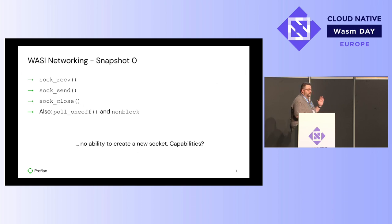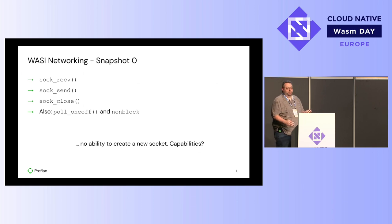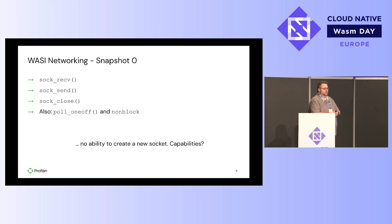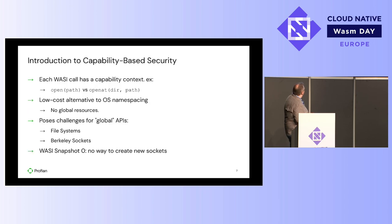This summarizes what Snapshot 0 was in terms of networking. You should immediately notice a problem: there is no way to create a new socket here. The runtime could create a set of sockets, hand them to the WebAssembly application, and you could operate on those sockets — read, write, close them, wait for I/O — but that's really all you could do. We really need the ability to create new sockets, but the problem is on what capability do we do this?